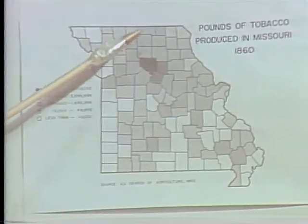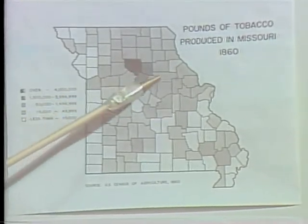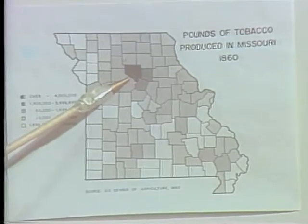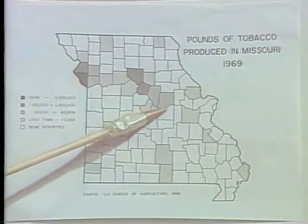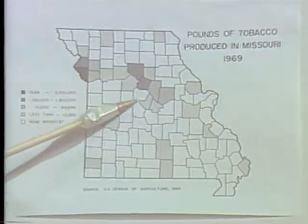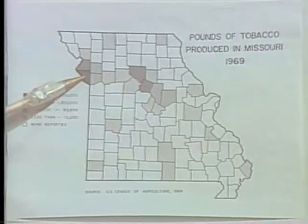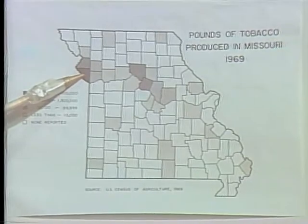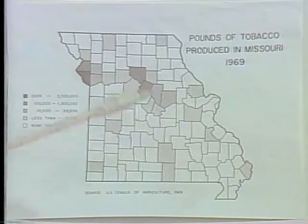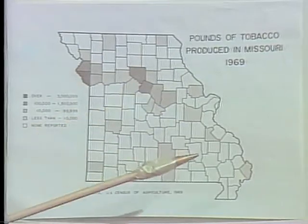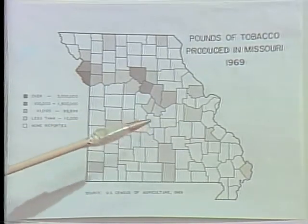Looking at tobacco growing — in 1860 tobacco was grown widely, with most commercial production in the Boone's Lick country. In 1969, which was the last agricultural census used, there is still some production in the Boone's Lick country. This tobacco is hauled to Weston in Platte County to be marketed. The production seen in other sections of the Ozark region is probably some garden plots recorded in the census.